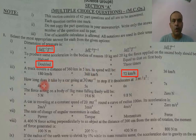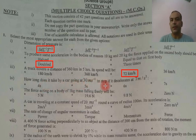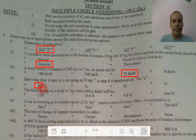How long does it take for a car going 30 meters per second to stop if it decelerates? Using the first equation of motion, I believe the answer should be 4 seconds.